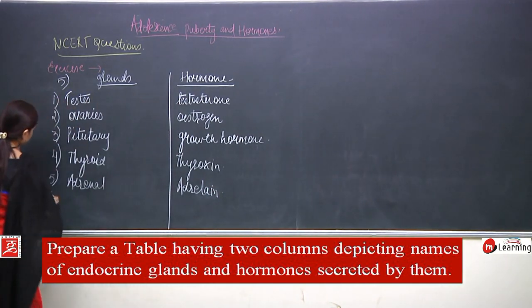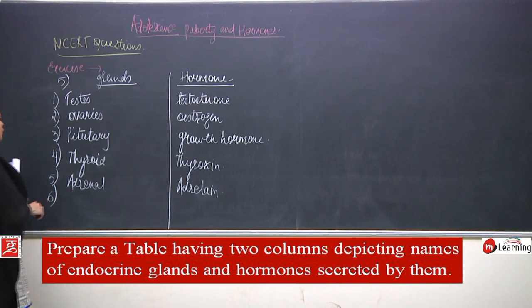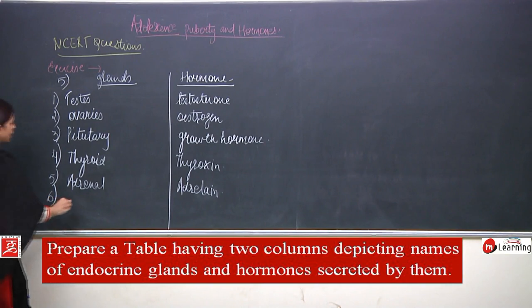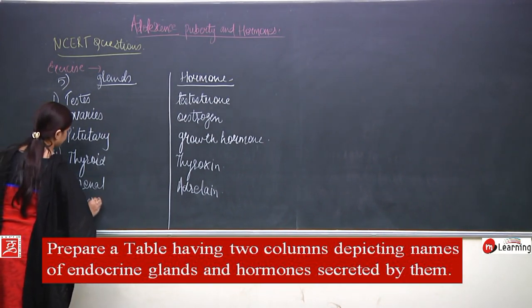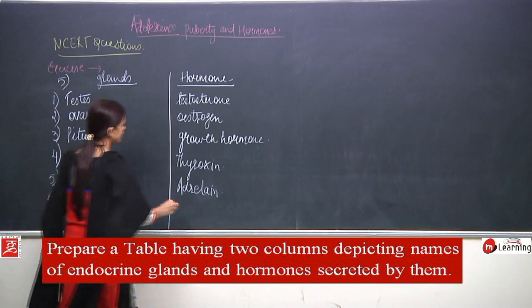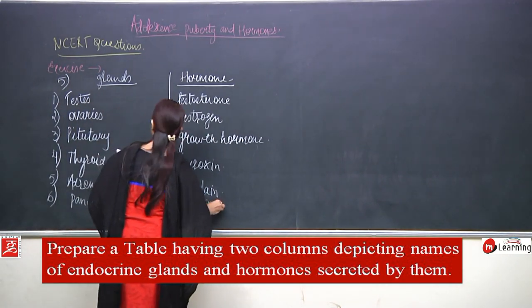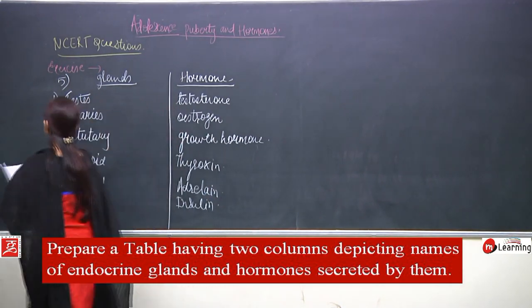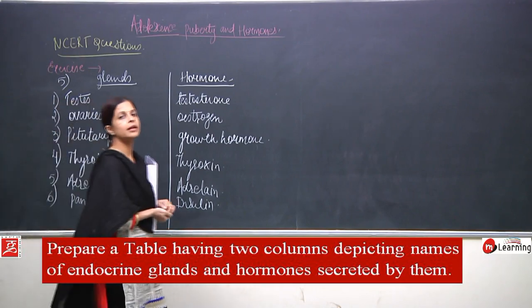So what is left? Testes, ovaries, pituitary, thyroid, adrenal - and now pancreas, which secretes insulin. So these are all the glands and these are all the hormones.